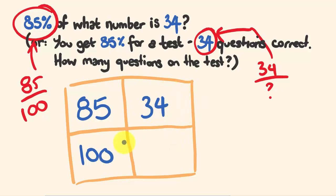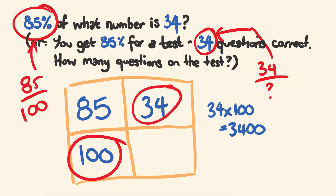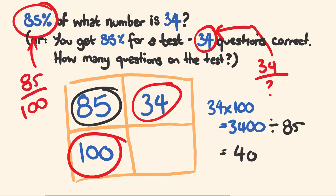which is 3400. And then we divide by this one here. So once again, multiply by these, divide by this. So this divided by 85. How many questions were on the test? There were 40. So that's another example of how you might use this.